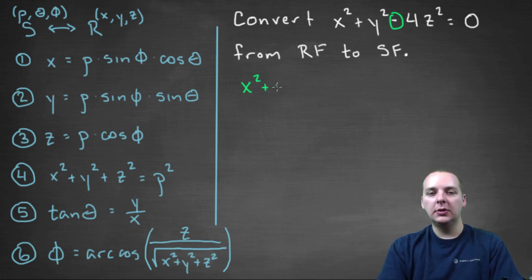So I think I would do something like this. I would take x² + y². And why don't we just go ahead and move that 4z². It's a minus anyway. So let's go ahead and move it to the right-hand side. We'll write 4z².